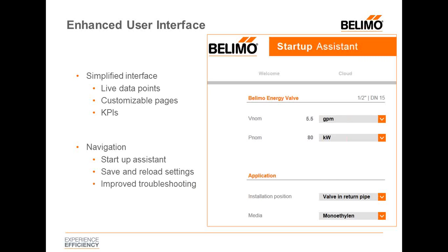We've also improved troubleshooting within the user interface. We've integrated informational buttons for the troubleshooting section as well — if a trouble code is triggered for an energy valve, it indicates what the trouble code is and also indicates a possible solution with the informational button, giving the end user more guidance on what the error could be and how it could be corrected.